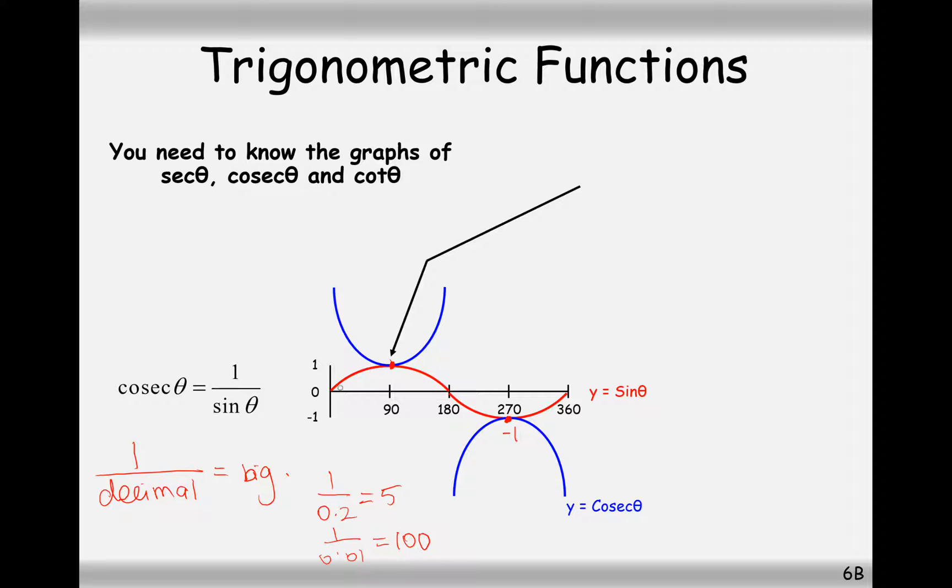But now let's think about what happens in these decimal values here. When the sine graph is in between 0 to 1, the cosec graph is going to be 1 over all of these decimal values. So as the decimal gets smaller, the 1 over decimal value is going to get bigger and bigger and bigger, up to a point of where it reaches an asymptote. So there are going to be asymptote at this point here, this point here, and this point here, because we can't have 1 over 0.